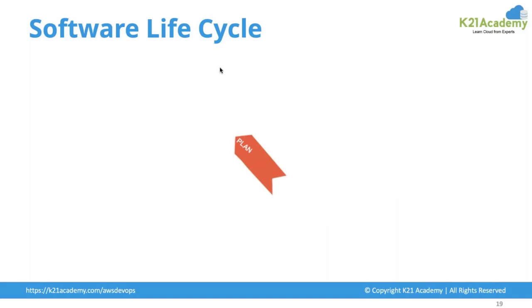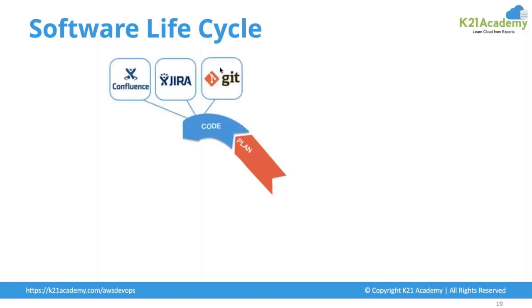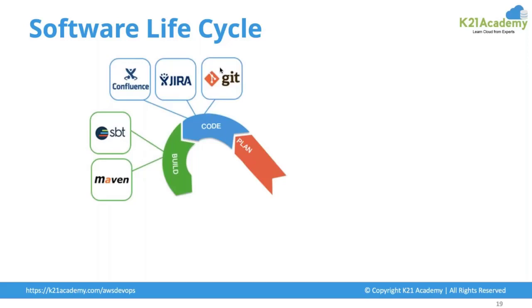If you think of a software lifecycle, any application you start to develop goes through different phases. For example, if a company requires to develop an application, first there has to be a planning phase — where you plan how to develop this application. Once it is planned, you start developing the code, and you need a repository to store your code. For that we have several tools like Confluence, Jira, and Git.